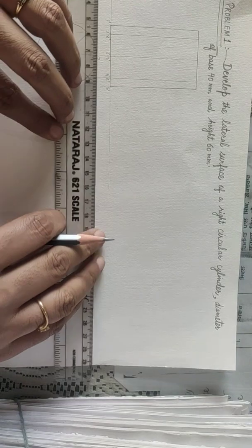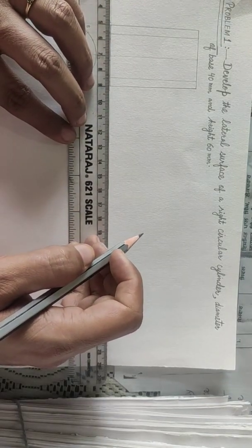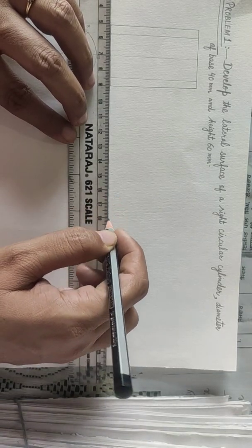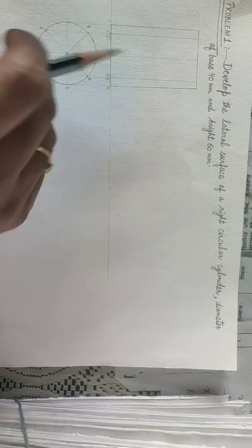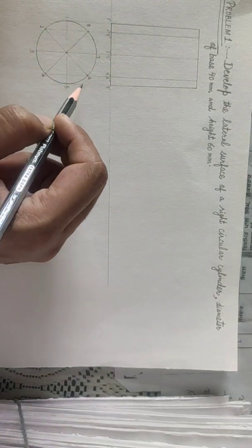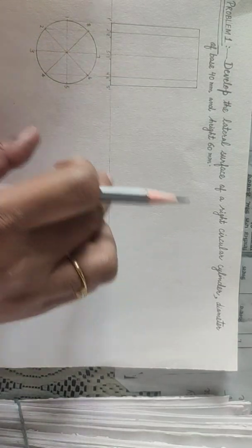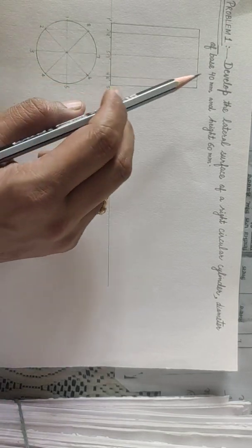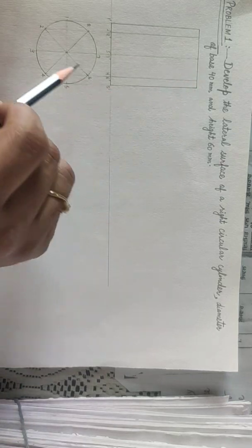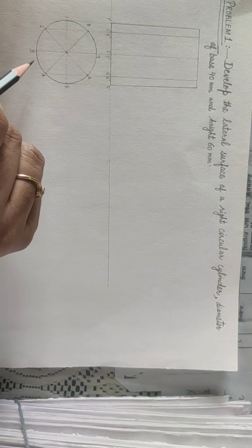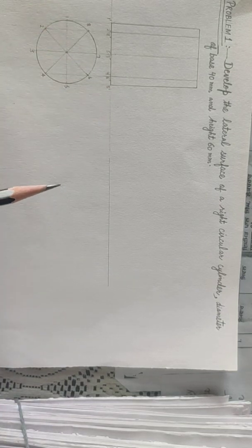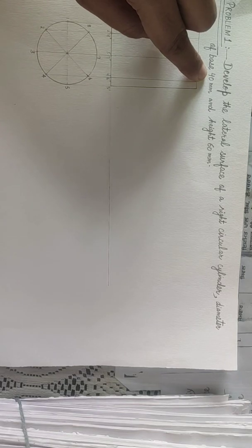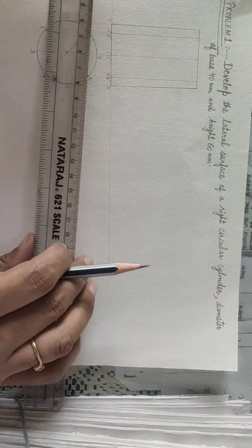So this is our front view of the cylinder. Now we have to develop its surface. Development means if we open up the cylinder then how it will be like. So I am just extending this reference line further. The developed part length will be equal to the circumference of this circle. So the diameter is 40 so the circumference of the cylinder will be pi d. So pi d is I have calculated 125.6.